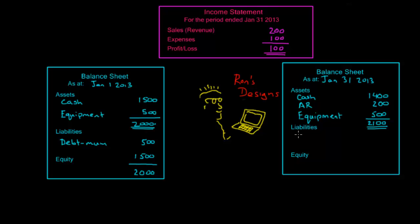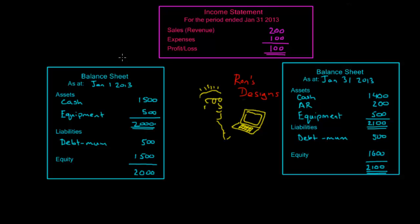In terms of liabilities, he still owes his mom the debt of $500. The amount left over in the business — the equity — is now $1,600, which is basically the $1,500 he started with plus the $100 profit he earned during the month. His value in the business has increased by $100. The total liabilities and equity must always balance to total assets, so total liabilities and equity is $2,100. Basically, the income statement helps explain how the activities of the business affected the balance sheet from the opening balance sheet to the closing balance sheet.